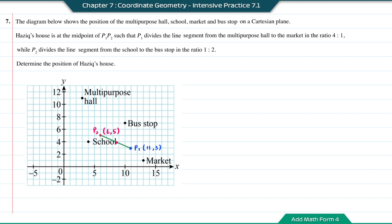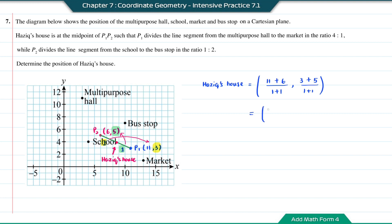Hazig House is the midpoint of P1 and P2, so the ratio is 1 to 1. The coordinates are (1×11 + 1×6) divided by 2, and (1×3 + 1×5) divided by 2, giving 17 over 2 and 8 over 2. Simplifying, the position of Hazig House is (17/2, 4).